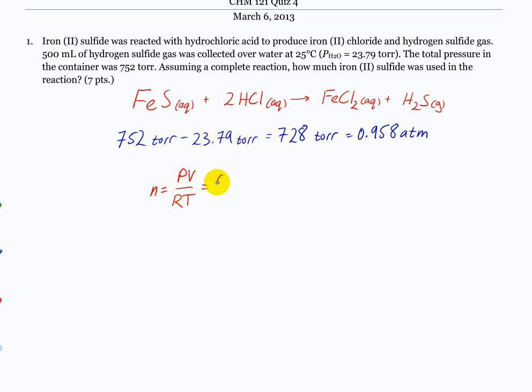So that's going to be 0.958 atmospheres times 0.500 liters divided by R times the temperature, which is 298 K. Okay, and I got 0.0196 moles H2S.